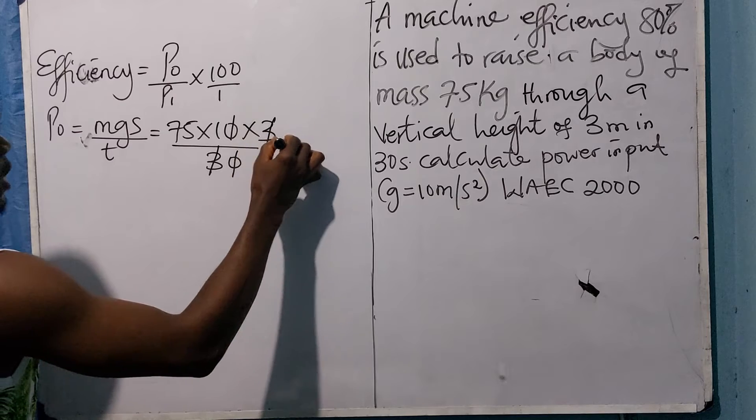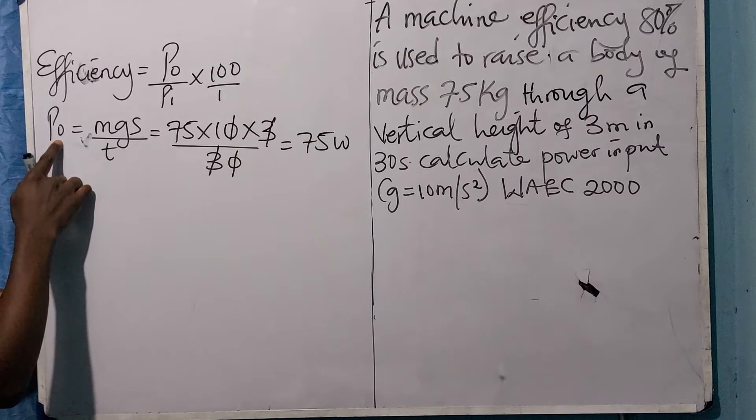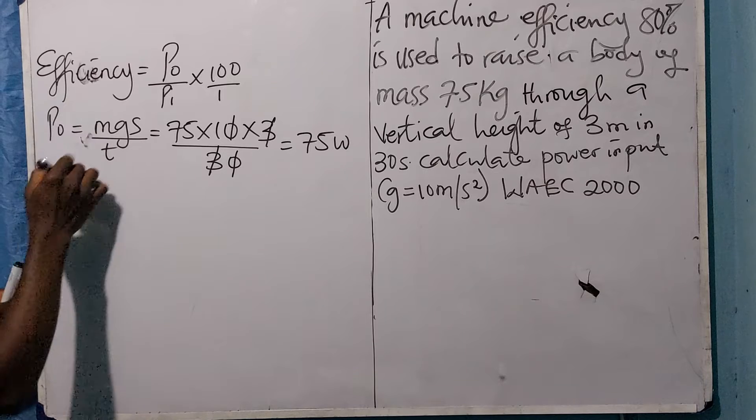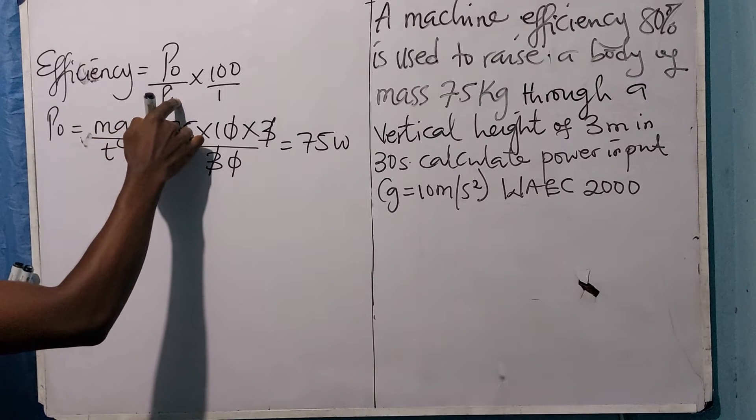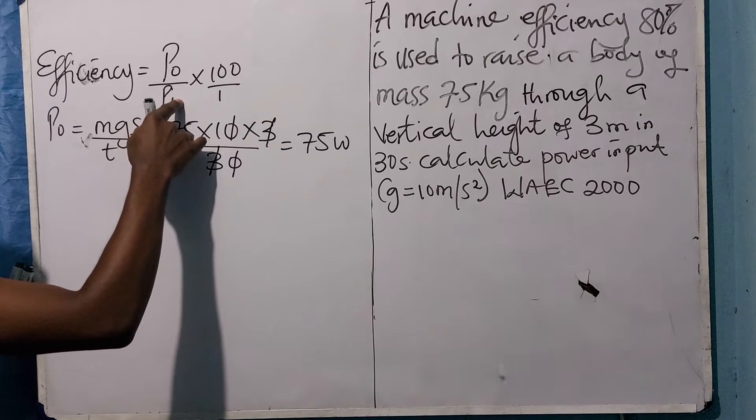Now we have to look for the power input, so we have to make power input the subject of the formula. In doing that, we now have efficiency times power input equals 100 times power output.